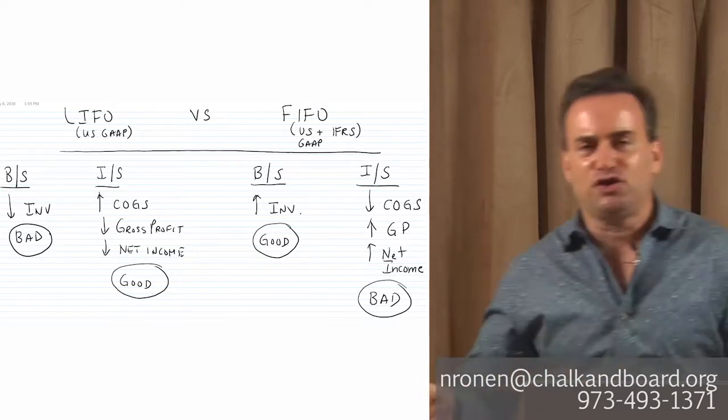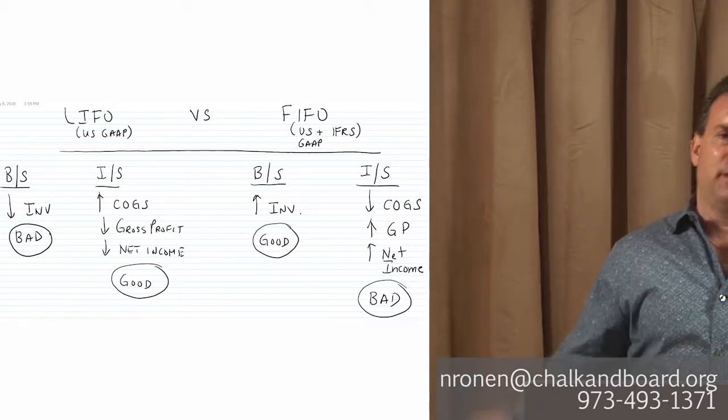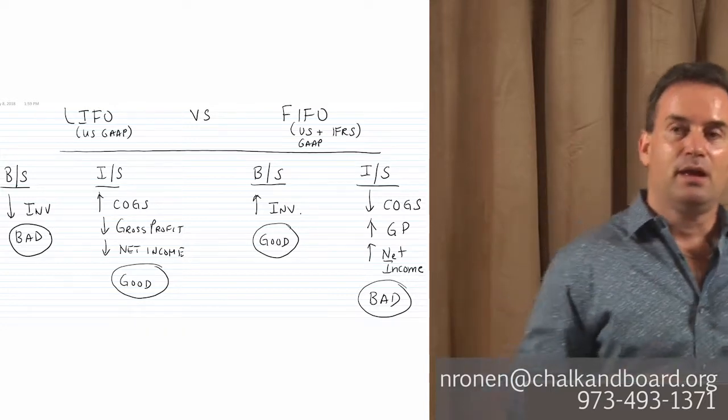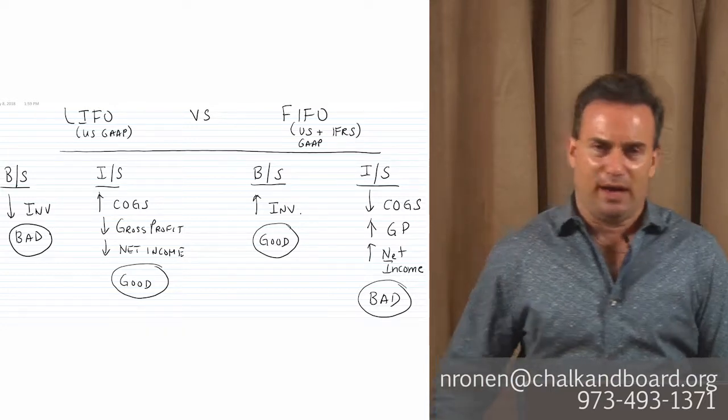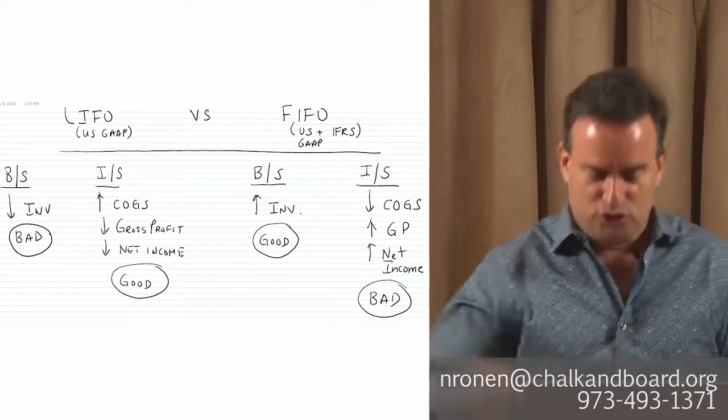In order to calculate the cost of goods sold that will show up on the income statement and the ending inventory that will be shown on the balance sheet. But it's not a valuation methodology. Now LIFO says the last units or the most recently purchased items will be sold first.